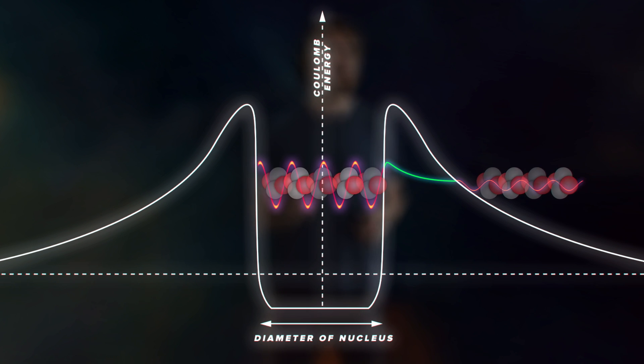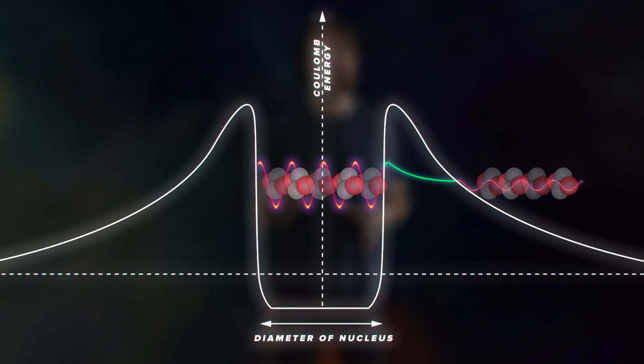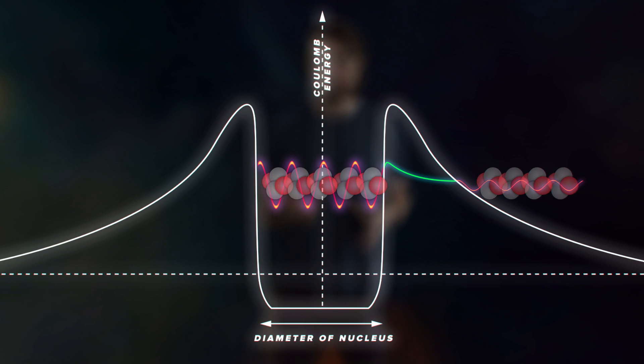You need to find the tunneling probability for each one of these encounters with the wall — a probability that will add up to 50% over the many, many encounters that happen in the 0.3 microsecond half-life. A good first step might be to figure out how many times the alpha particle encounters the wall in that 0.3 microseconds.